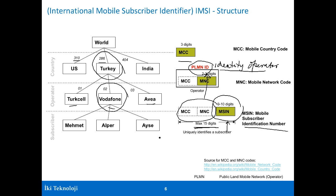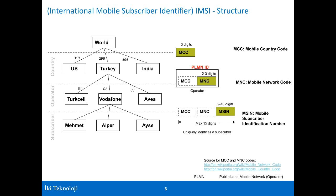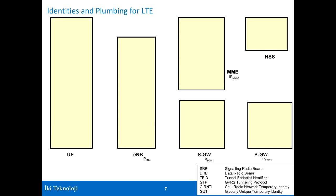The first two parts — MCC and MNC — are your operator identity, and the last part, the MSIN, uniquely identifies you as a subscriber. So if you happen to be Alper, you would have 28602 followed by another nine or ten digits. That identity is stored in your SIM card.